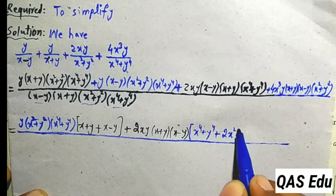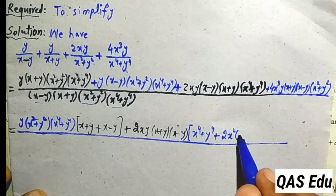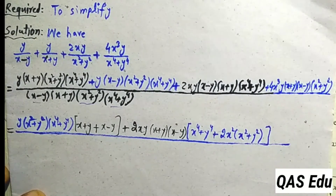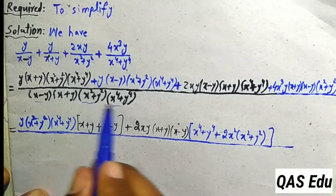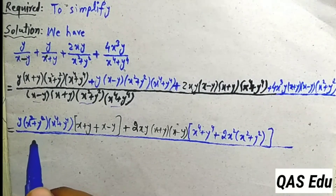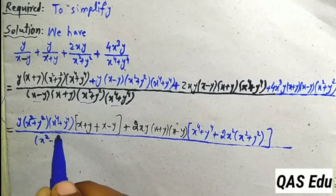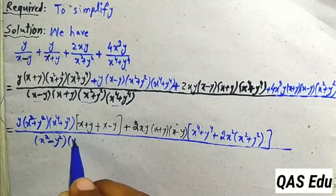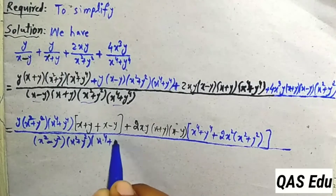2x² and multiply (x+y), (x-y), x²+y². In simplification we have a denominator. The a-minus-b, a-plus-b formula. We have a²-b². We have x²-y², x²+y², x⁴+y⁴.